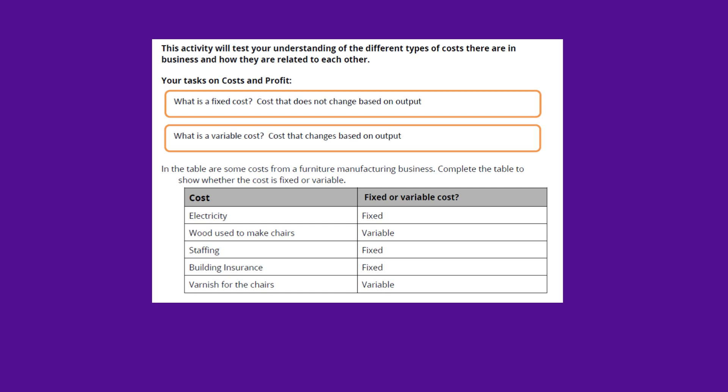Electricity, for your intents and purposes, is a fixed cost. Wood used to make chairs will be variable as the amount of chairs changes, so it's a variable cost. Staffing in this example is fixed. Building insurance is fixed because it will stay the same. And varnish for chairs will be variable because you will need more as you make more chairs.